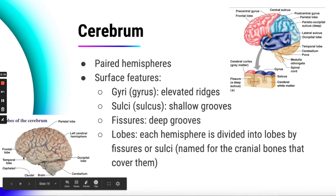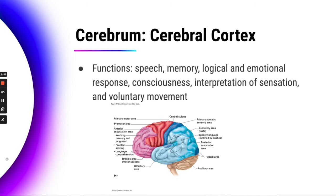The cerebral cortex — the outer part of the cerebrum — functions with speech, memory, logical and emotional responses, consciousness, interpreting sensations, and voluntary movement. You can see on the diagram that different parts are labeled showing where on the cerebrum those different functions would be controlled.